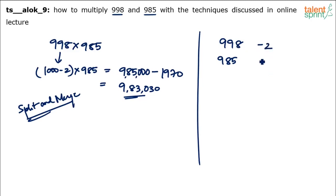998 is 2 less than 1000. 985 is 15 less than 1000. So take the distance of the values from 1000. We are taking the base as 1000. What do we find? 998 is 1000 minus 2, 985 is 1000 minus 15. Now you have to just take either 998 minus 15, 983, or 985 minus 2, 983. Then there will be 3 zeros because the base is 1000.